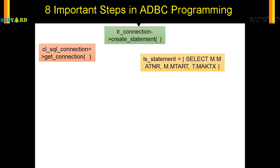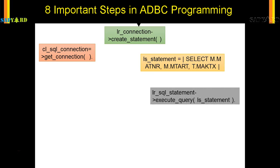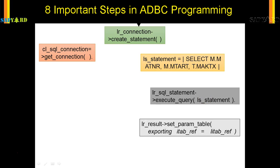Next we need to issue the native SQL calls — we fire and execute the query, passing the select statements saved in ls_statement. The fifth step is to assign the target variable for the result set. We set the parameter_table and assign the result to li_tab_reference, which is the target variable for the result set.